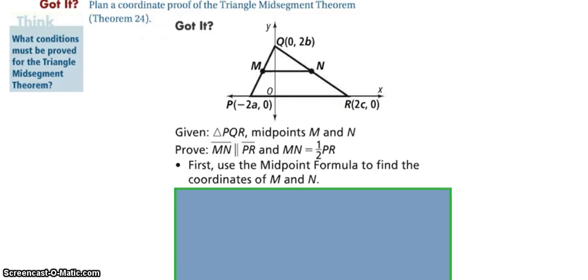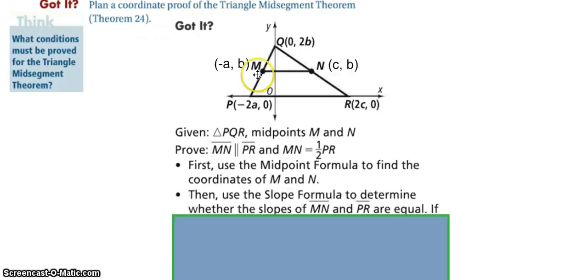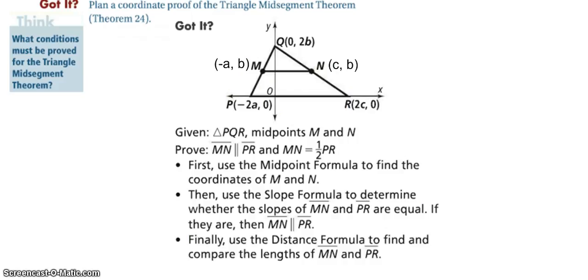All right, so once we have this triangle on the coordinate grid, what we know is that M and N are the midpoints of these two sides, so we want to use the midpoint formula to find their coordinates. So then we could find the slope of MN to determine if it is parallel to our base, and then finally we can use the distance formula to check that MN is in fact half the length of PR.